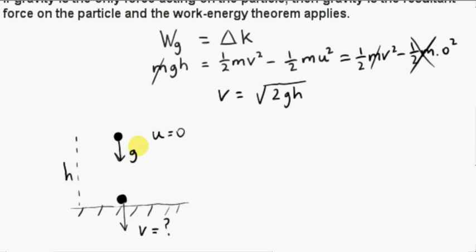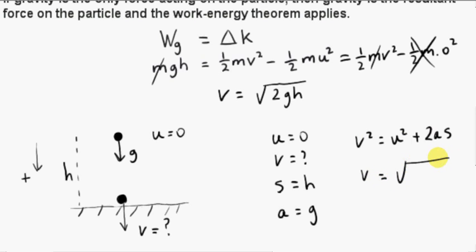We want a formula that connects u, v, the acceleration and the distance. So u is zero. V is what we're after. The distance we called s. Distance is h here. The acceleration is g. So we could take downwards direction as positive. So the vectors are pointing downwards. And then we use the formula v squared equals u squared plus 2as. We derived this formula for the case of linear motion with uniform or constant acceleration. So we get v equals the square root of zero squared plus two times the acceleration, which is g, times the distance s, which is h.